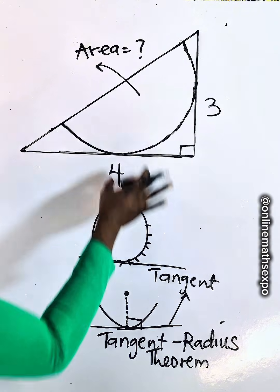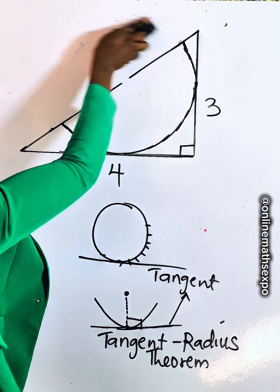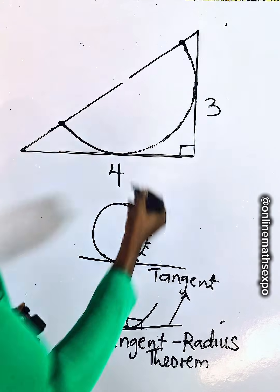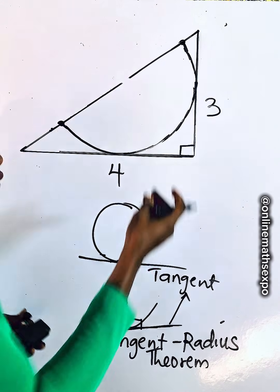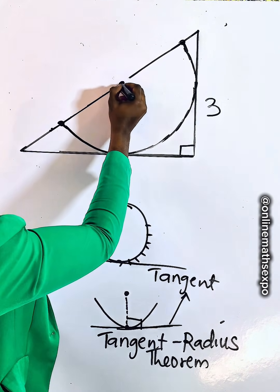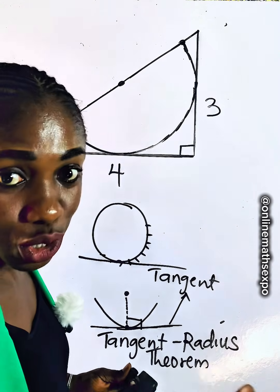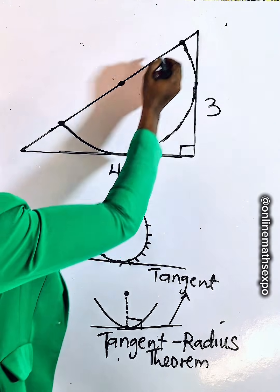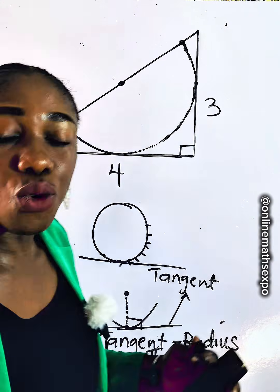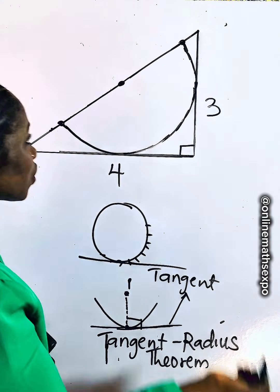Will this theorem help us in answering this? Let's go back. We are told this is a semicircle, so from one end to the other is the diameter. From the diameter, we can find the center — the center is somewhere in the middle. From the center, the distance to each end is the radius. We are free to draw as many radii as we want from the center.